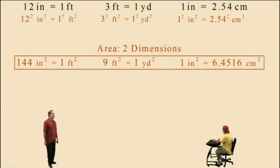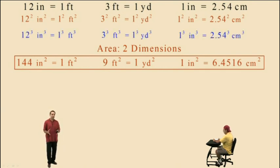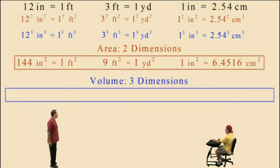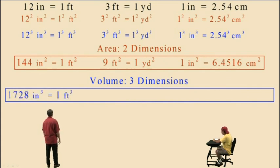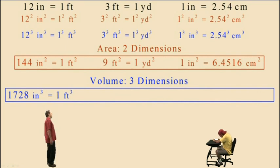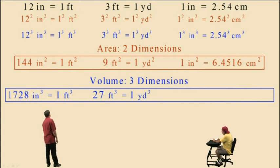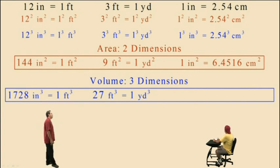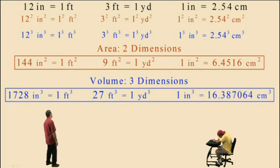What about volume? Volume is three dimensions, so we need to take our equivalent relationships of length and cube both sides. If we take 12 inches equals one foot and cube both sides, we get 1,728 cubic inches equals one cubic foot. If we take 3 feet equals one yard and cube both sides, we get 27 cubic feet equals one cubic yard. And taking 1 inch equals 2.54 centimeters and cubing both sides gives 1 cubic inch equals 16.387064 cubic centimeters.